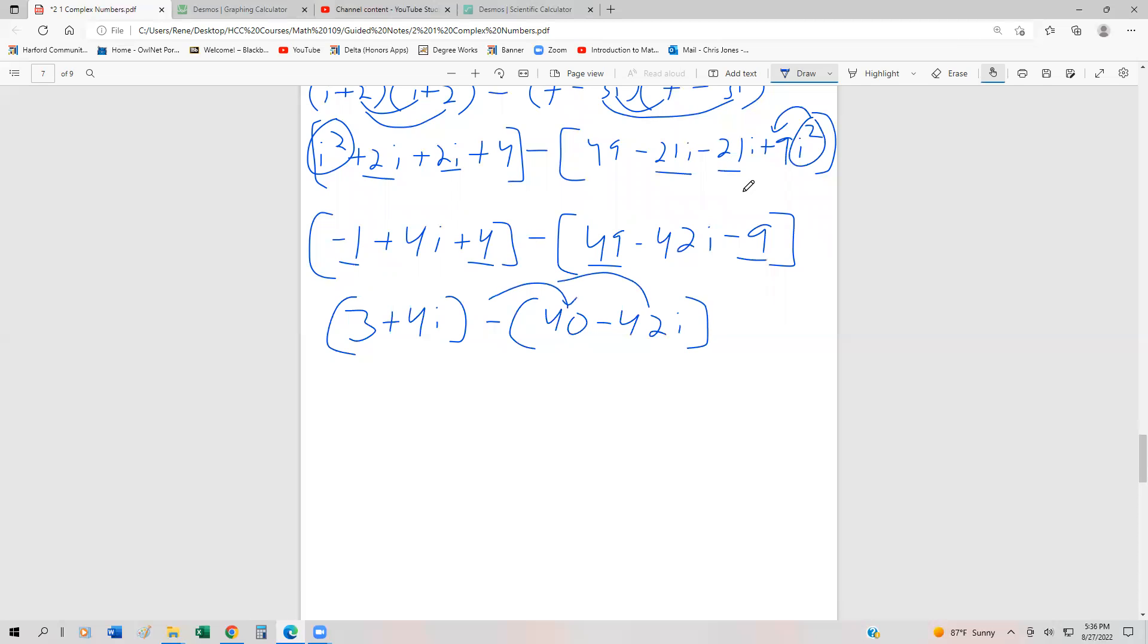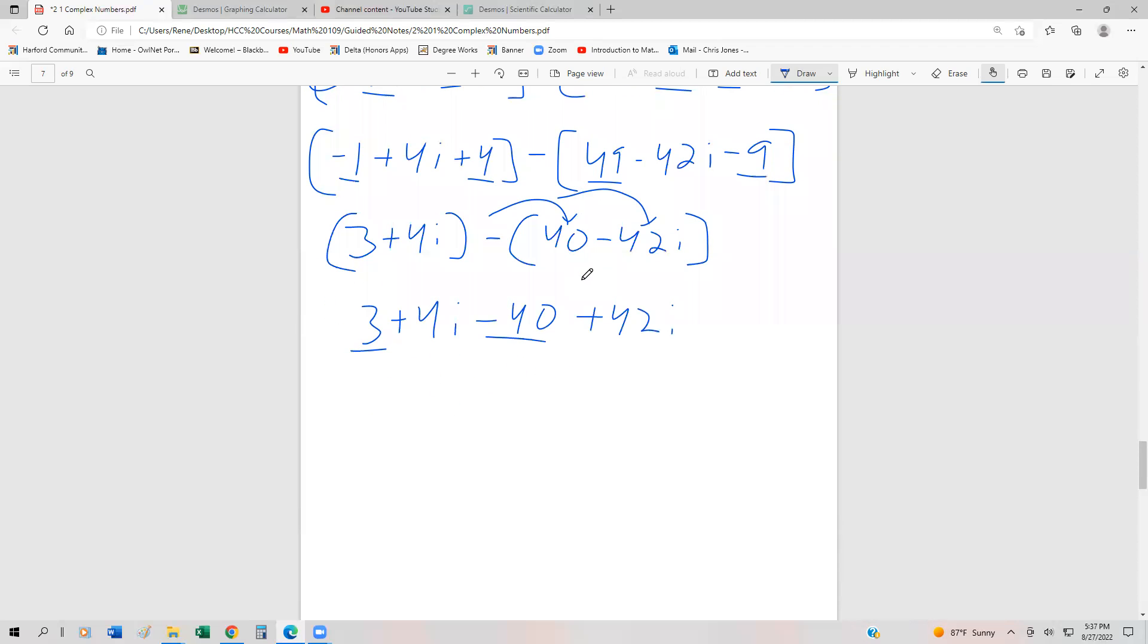We're going to distribute the negative. And we have 3 plus 4i minus 40 plus 42i. And then finally, to put it in the form a plus bi, 3 minus 40 is negative 37. 4i and 42i is going to be 46i. And we're done.